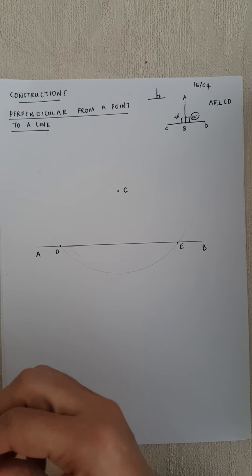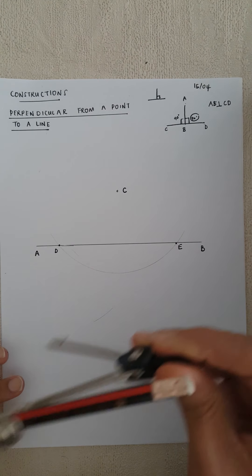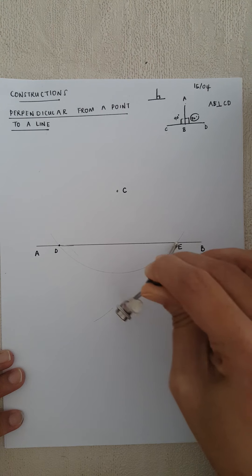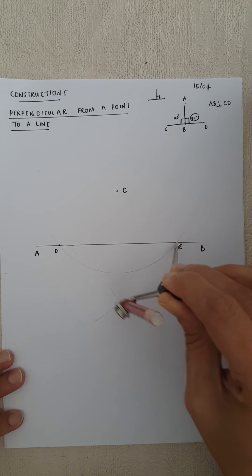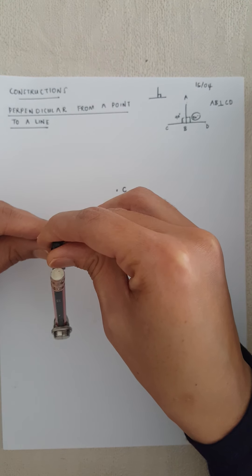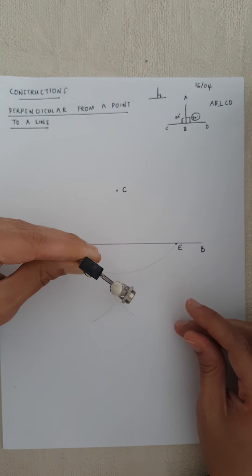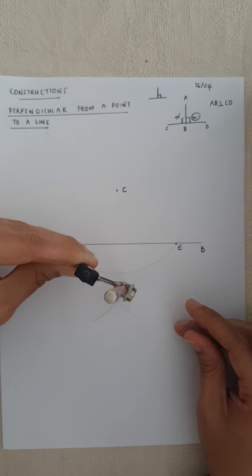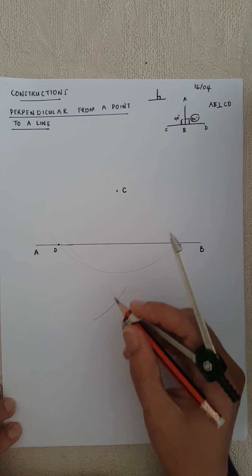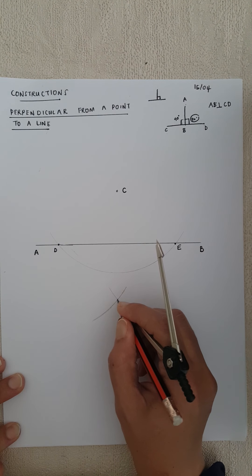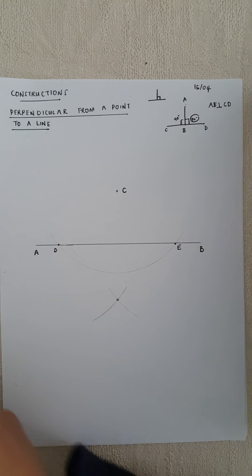Now the next step is that I put the compass point onto point D and draw a small arc there. Then I put my compass on point E — holding the top of the compass — and I draw an arc there. I need these two arcs to cross. I draw the arc and make sure they cross over each other.